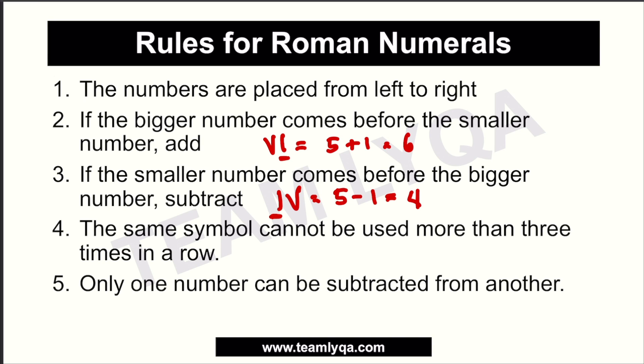Another rule: the same symbol cannot be used more than 3 times in a row. That's why 3 is written as III, but 4 cannot be written as IIII — that is wrong, because that's four I's. That's why we write it as IV instead.